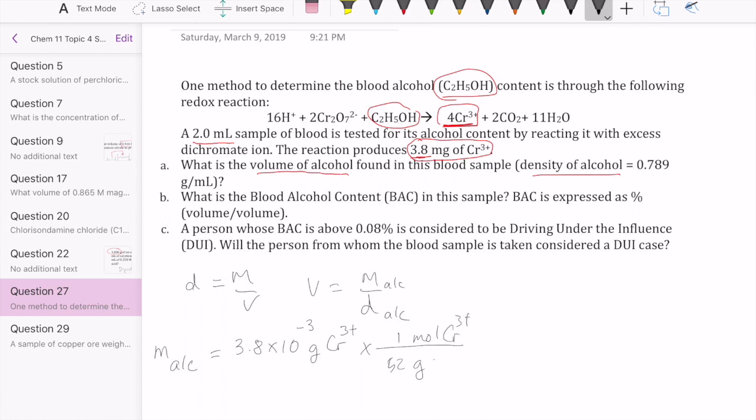Now that I have the number of moles of chromium, I can use my stoichiometry between chromium and alcohol or ethanol, which is C2H5OH for that conversion. That's one to four. Then I need the molar mass, which is 46 grams per mole. That gives me 8.40385 times 10 to the minus four grams of alcohol.